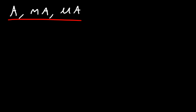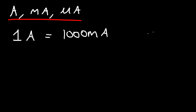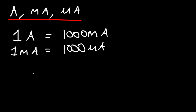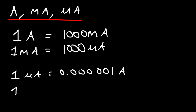When dealing with currents in an electric circuit, you'll see units such as amps, milliamps, and microamps — these three are the most common. You need to know how they relate to one another. One amp is 1,000 milliamps, and one milliamp is 1,000 microamps. So one microamp is 0.000001 of an amp, and one milliamp is 0.001 amps.